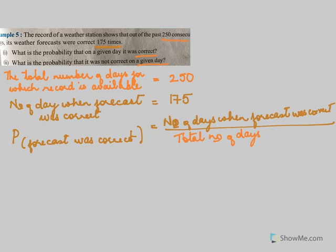The forecast was correct 175 times out of a total of 250 days, so the probability is 175 over 250, which equals 0.7. So the probability that the forecast was correct is 0.7.